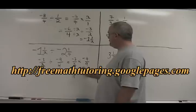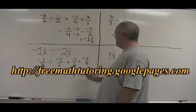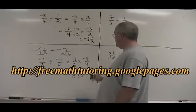12 and 18 have a common factor of 6. 12 divided by 6 is 2. 18 divided by 6 is 3. Our answer is 2 thirds.